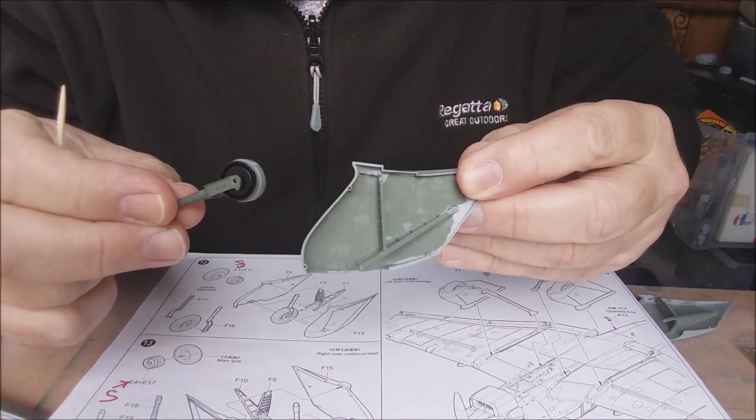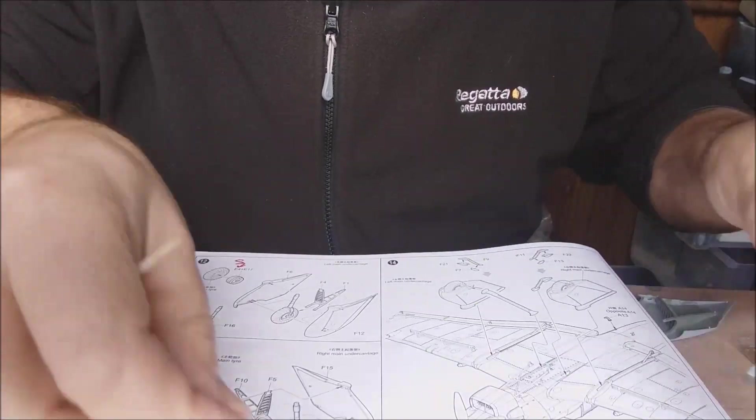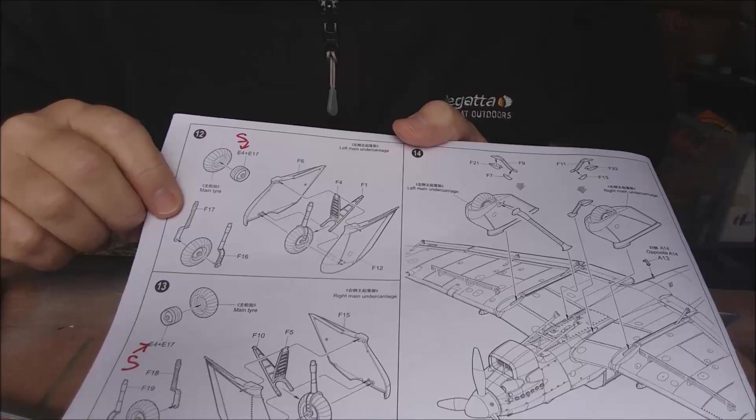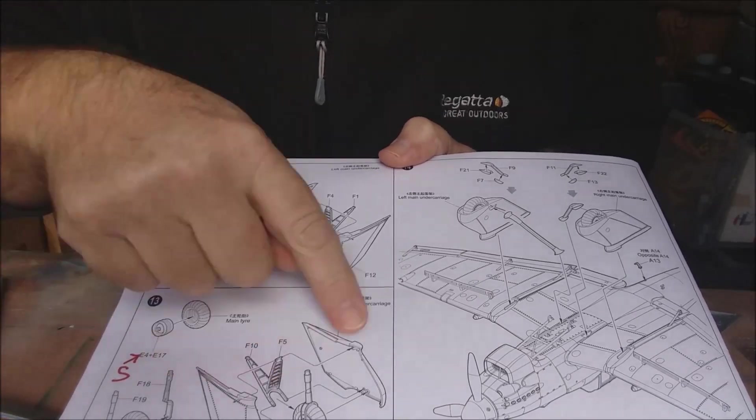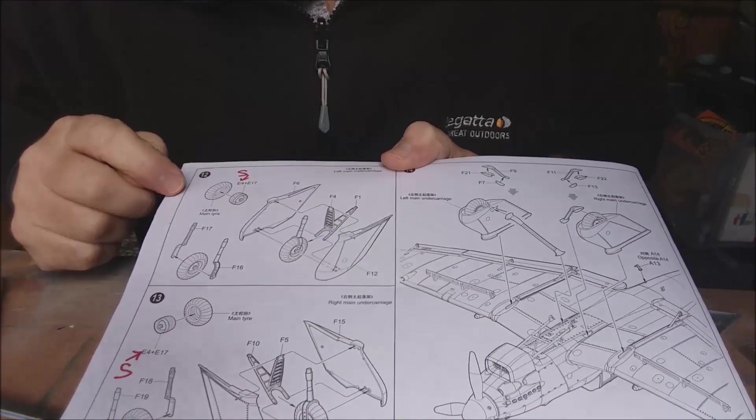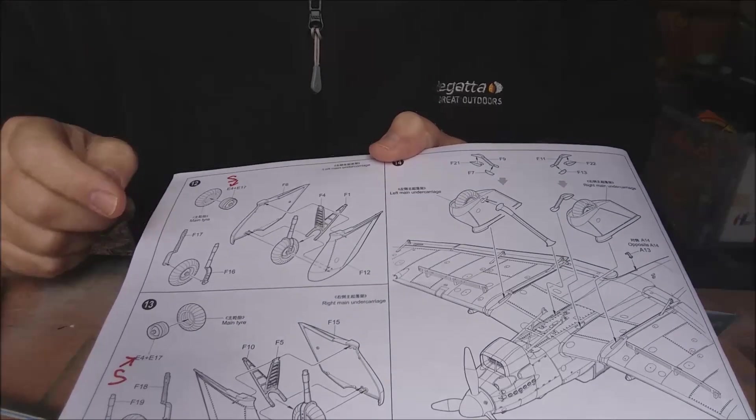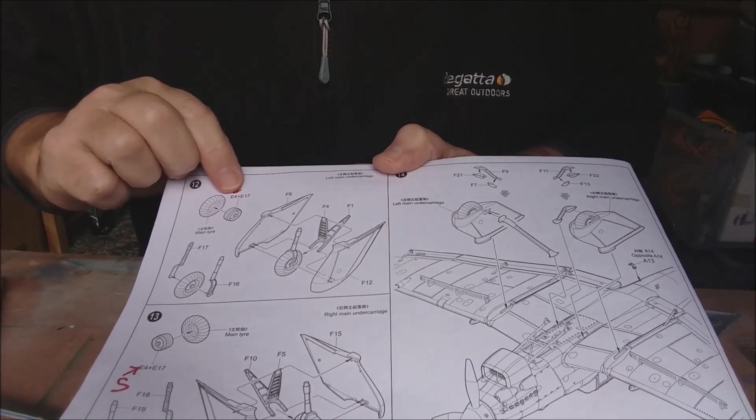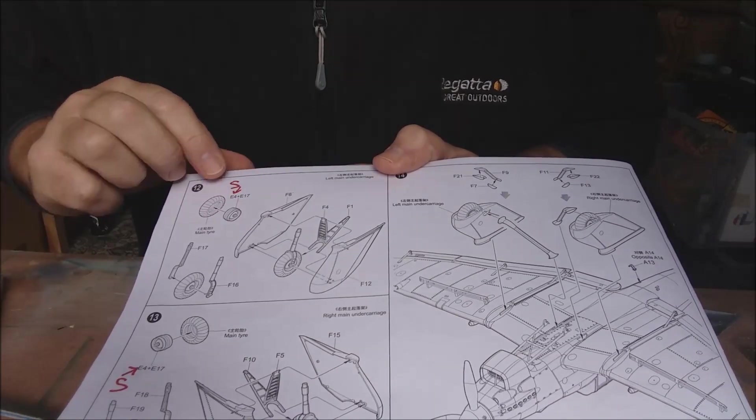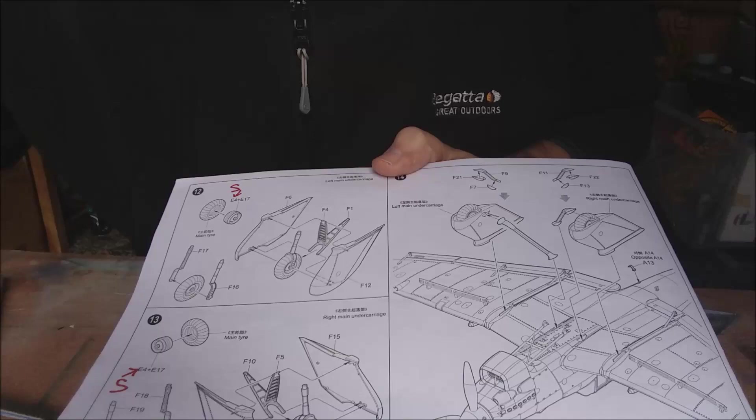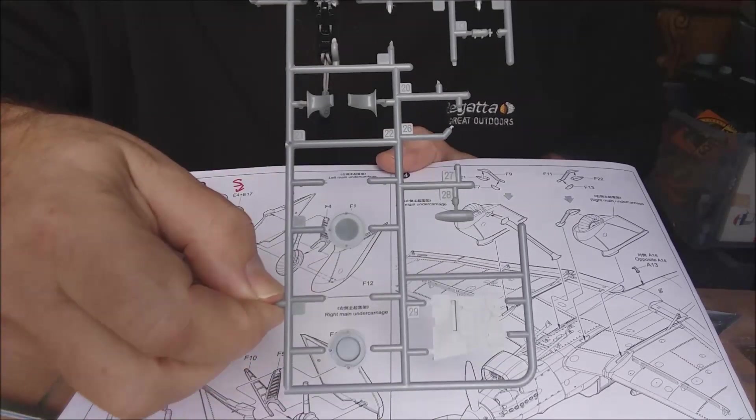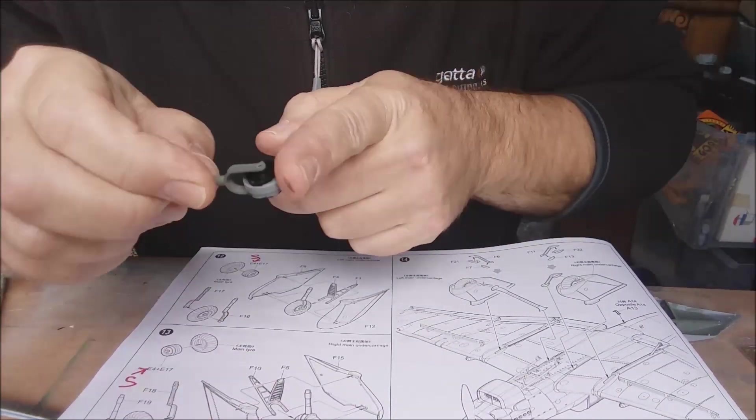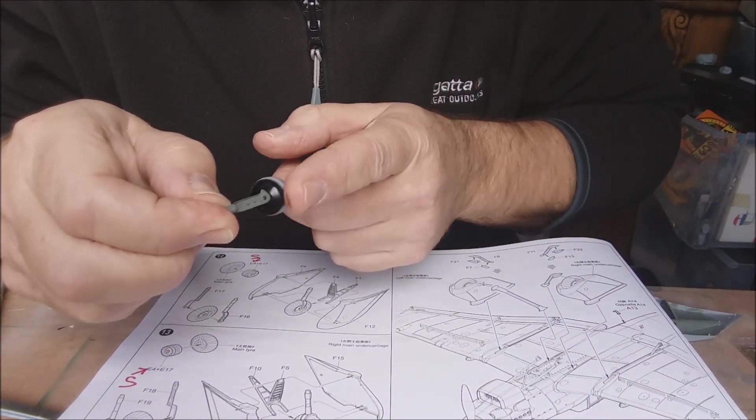For this, I can only assume that they use the same sprues for different, and the same instructions for different marks of Stuka. So you don't want E4 or E17, you want F24 and 25 to get you that better fit and they spin lovely.